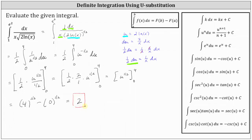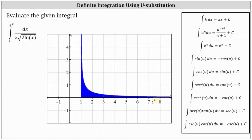Before we go, let's take a look at the graph of the integrand function over the closed interval from 1 to e squared. If we shade the area bounded by the function and the x-axis over the closed interval from 1 to e squared, notice the area is above the x-axis, which means the area of the shaded region is exactly 2 square units. I hope you found this helpful.